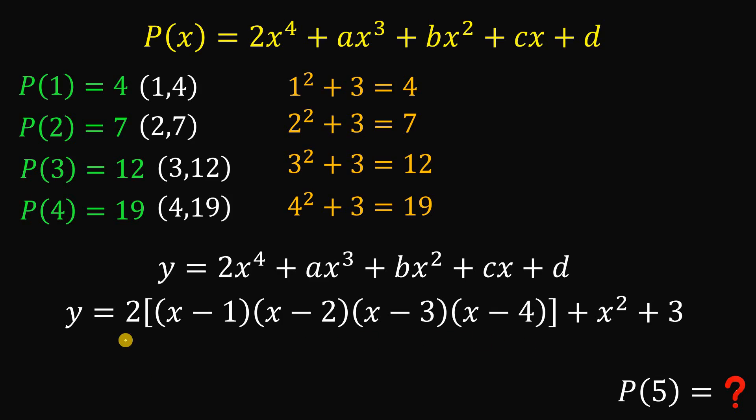Now if you plug in x equals 1, or x equals 2, or x equals 3, or x equals 4, this part becomes 0. And this is just 1 squared plus 3, 2 squared plus 3, 3 squared plus 3, and 4 squared plus 3. And there you have it.